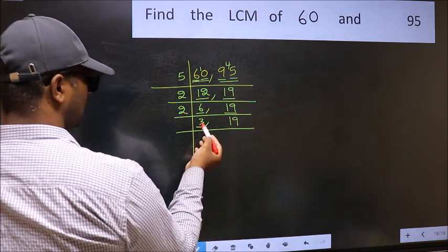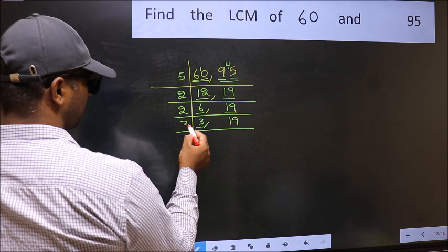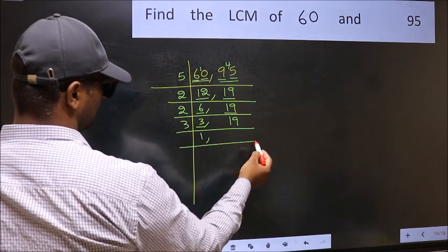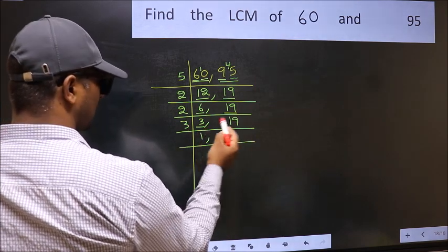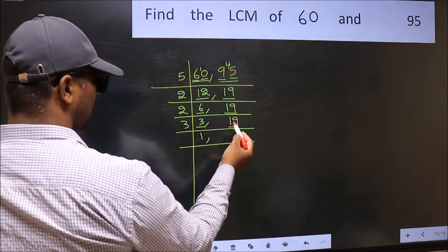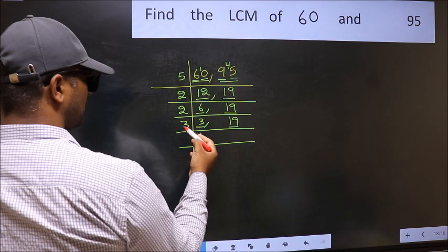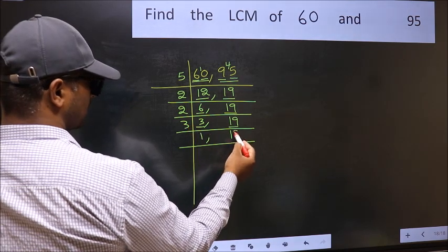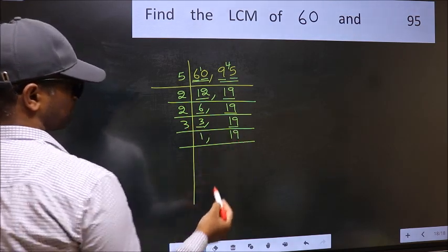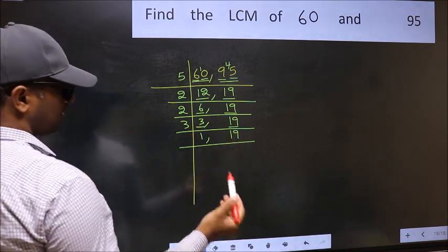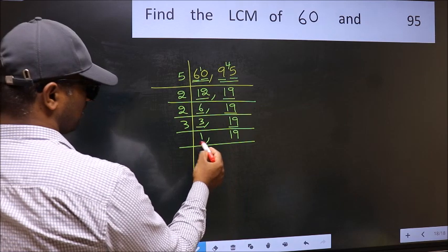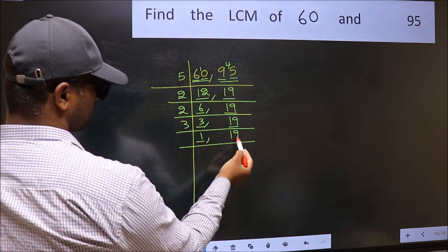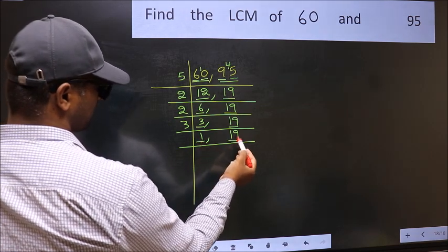Now we have 3. Three is a prime number, so 3 once 3. The other number, 19, is not divisible by 3, so we write it down as it is. Now we get 1 on the left side, so focus on the next number, 19.